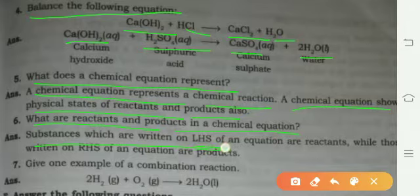Substances which are written on the left-hand side of the equation are reactants, while those written on the right-hand side of the equation are products.